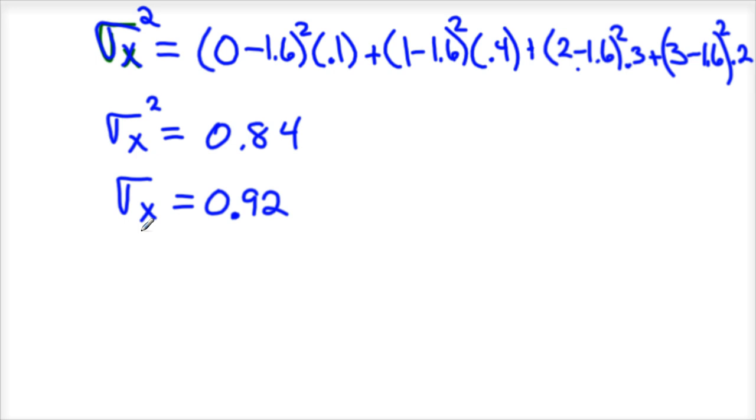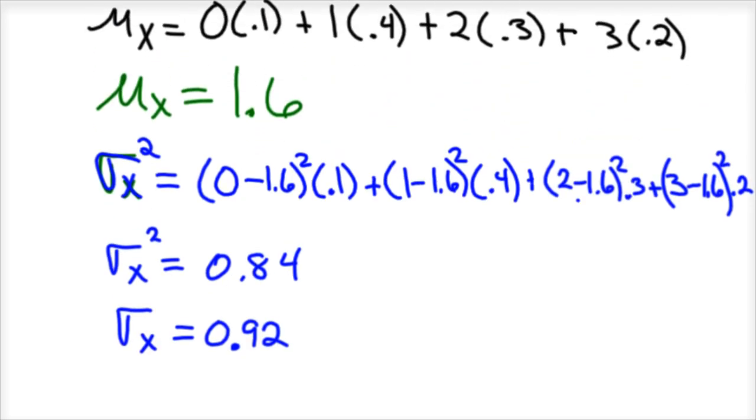So now we're going to perform a transformation on this. We've got our mean and our standard deviation. So our mean, our expected value is 1.6. Our sigma sub X is 0.92. And let's say that every time the taxi cab driver has a person ride with him, he gets another $10 bonus.